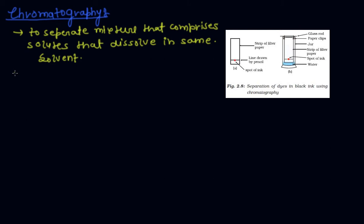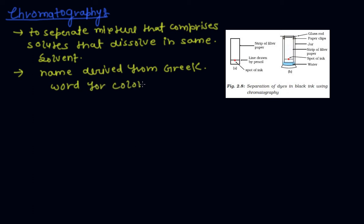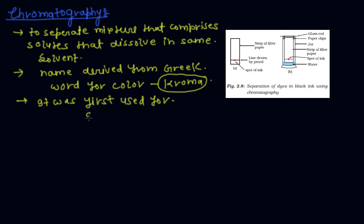This method gets its name from the Greek word for colour, 'chroma', because it was first used for separating colours.